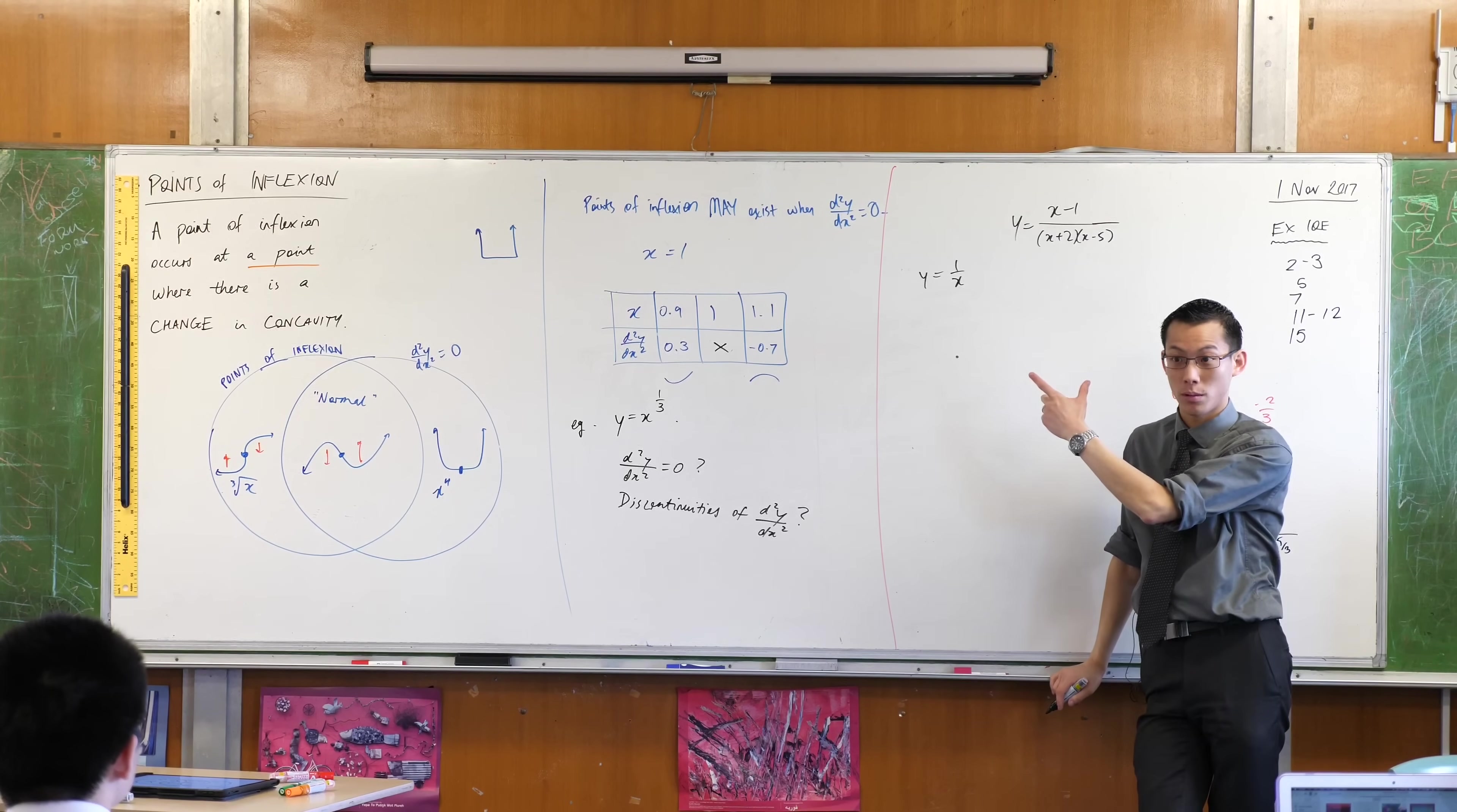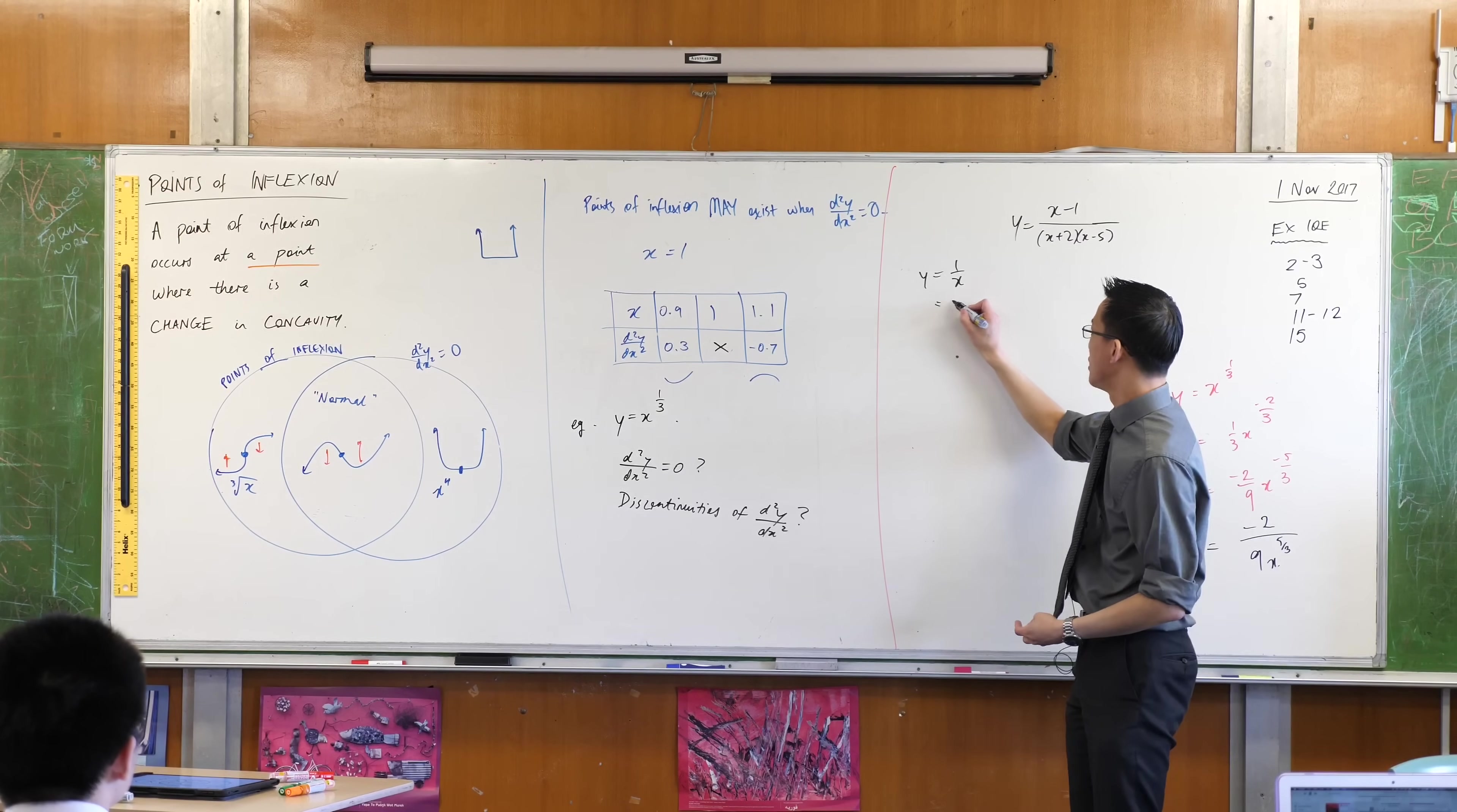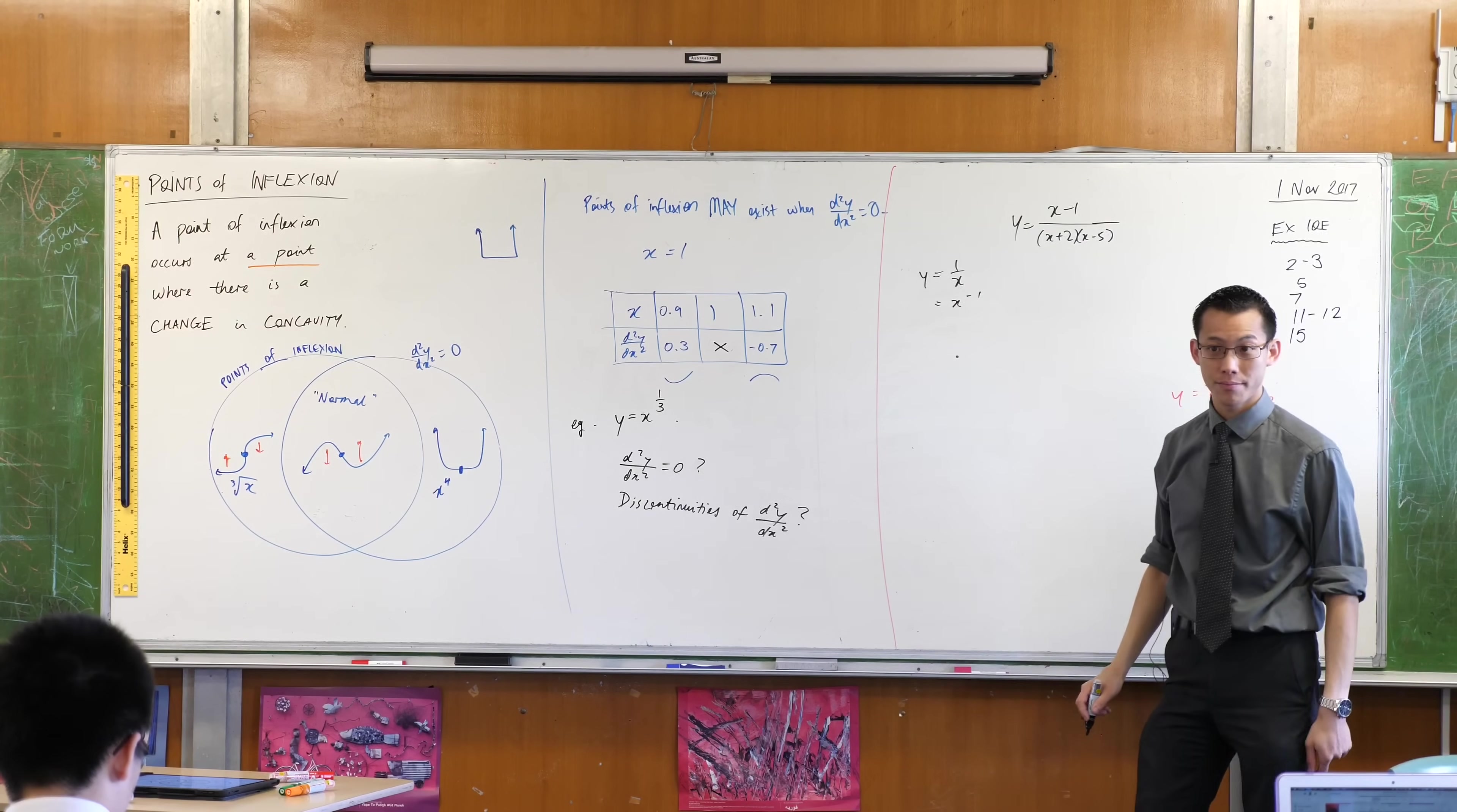We all know what this shape is and what it looks like. Let's see what happens when we apply the tools of calculus to it. This is of course just x to the negative 1.